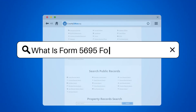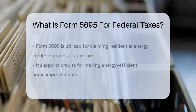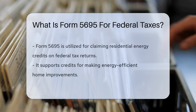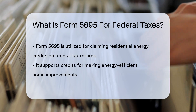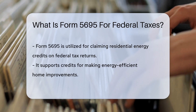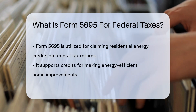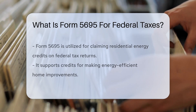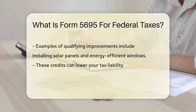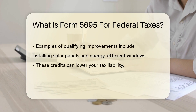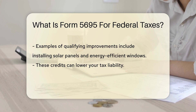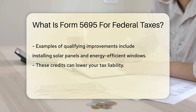What is Form 5695 for federal taxes? Form 5695 is used to claim residential energy credits on your federal tax return. It allows you to receive credits for energy-efficient improvements made to your home, such as installing solar panels or energy-efficient windows.